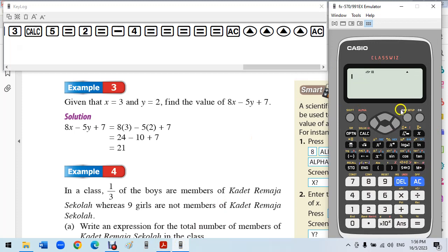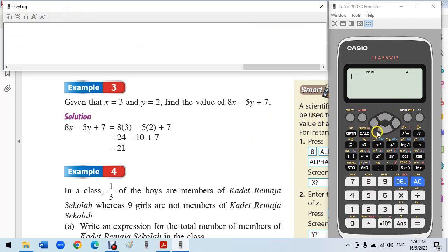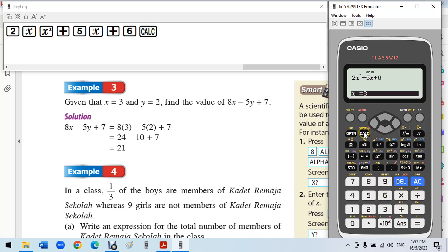This CALC is very powerful. Let's say I have some complicated equation with unknown x only: 2x squared plus 5x plus 6. Then I calculate. They ask me what is the value of x, then I will say 1, then equal. I can press equal again to substitute another value, and calculate again to substitute another value.